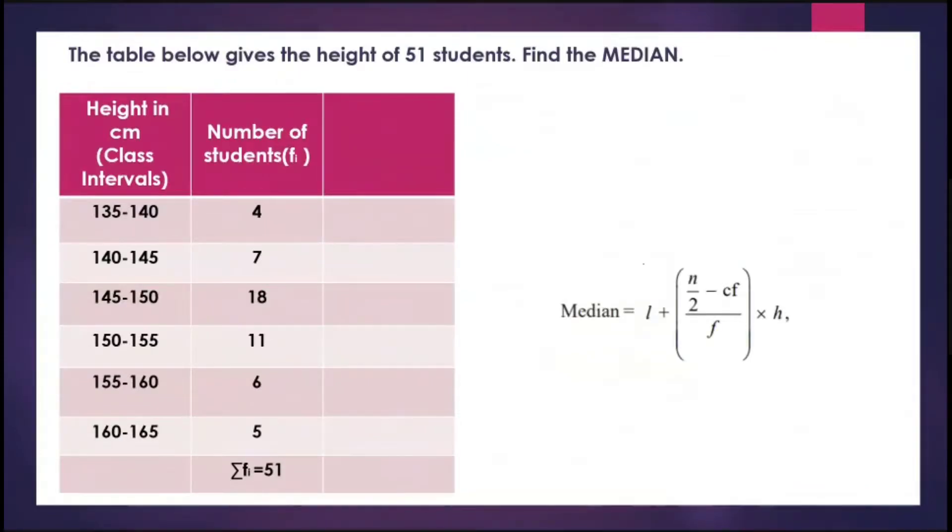The formula is median equals L plus N by 2 minus CF upon F into H. L is the lower limit of the median class. N is the total number of students, so N by 2 will be 51 by 2. CF is the cumulative frequency of the class preceding the median class, so I need the cumulative frequency. F is the frequency of the median class. H is the class size.